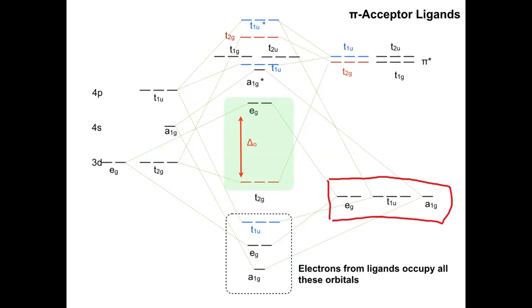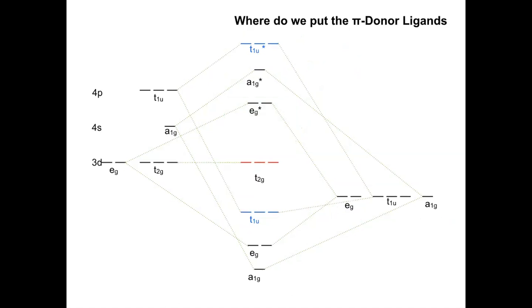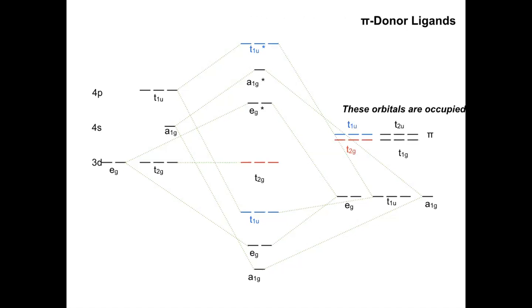We can do a similar analysis for pi donor ligands. We reset and come back to our sigma donor only MO diagram. Now we consider what happens with pi donor ligands. Because they're pi donors, those orbitals are full of electrons, meaning the pi donor orbitals are actually the HOMO of the incoming ligands. Their orbital energy is going to be much lower than in the pi accepting case. We place them on the diagram — these pi donor orbitals are all full, and they carry the same symmetry labels as the pi accepting case.